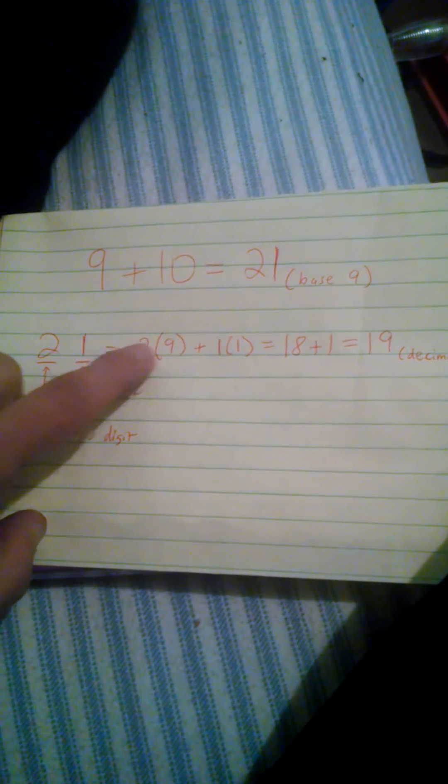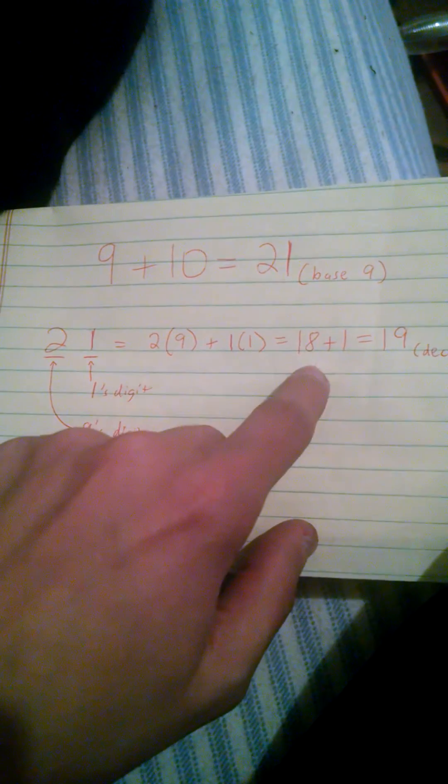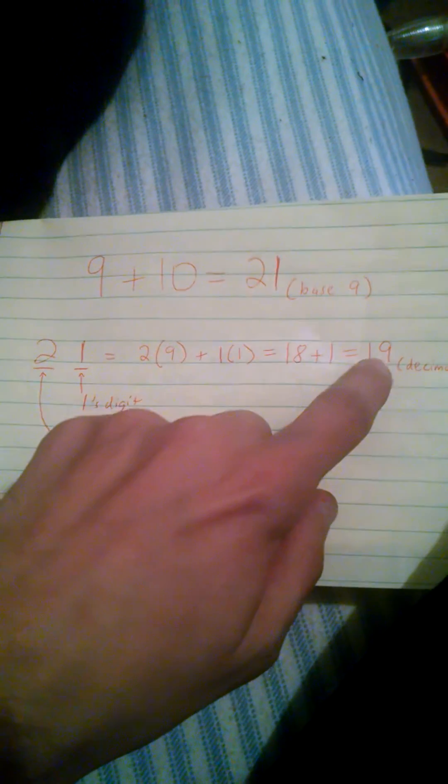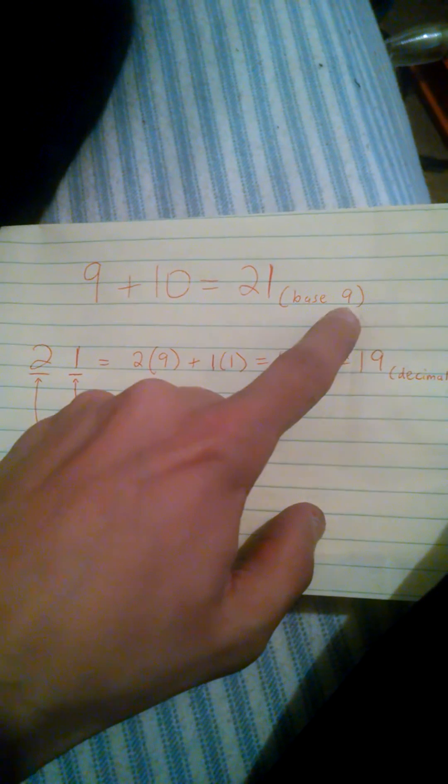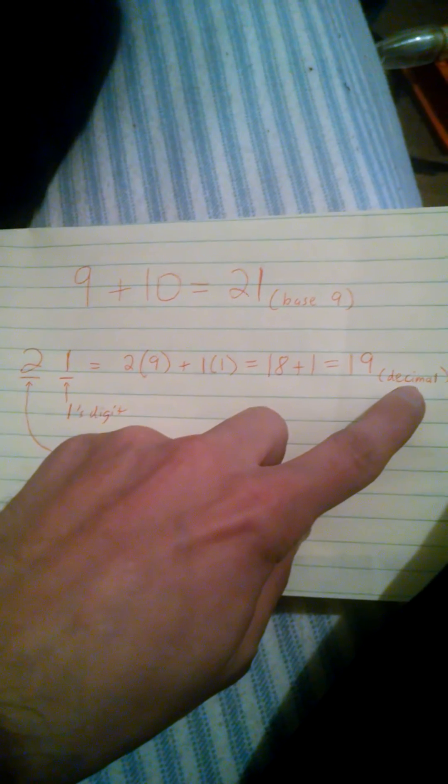Now with base 9, I say 2 times 9 plus 1 times 1. And 2 times 9 in decimal is 18. 1 times 1 is 1. 18 plus 1 is 19. So what this means is 21 base 9 is the same as 19 in base 10 or decimal.